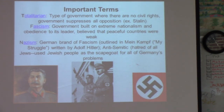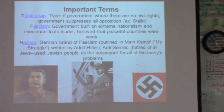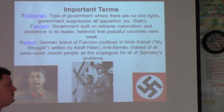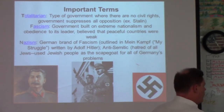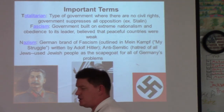Here are three things to know for the 20th century. Totalitarianism is a government where there are no civil rights, the government has total control, and all opposition is suppressed — like Joseph Stalin or Saddam Hussein. Fascism is where the government is built on extreme nationalism: I know who is to blame for your problems, peaceful countries are weak, it's war and power that win — like Adolf Hitler and Benito Mussolini in Italy. Then Hitler takes fascism and ratchets it up into National Socialism — Nazism.